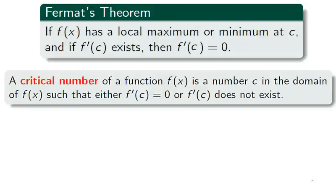With Fermat's theorem in mind, we define a critical number of a function to be a number c in the domain such that either the derivative does not exist or is zero. Just a word of warning. It is common for students to hear only the phrase does not exist or is zero. Be sure to note that a critical number must be in the domain.